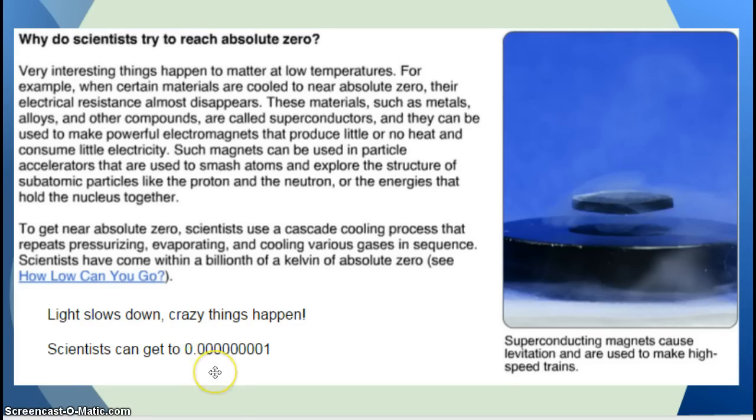Scientists can get to one billionth of a degree Kelvin. They can get to 0.0000001 Kelvin. But they still haven't gotten to absolute zero. And so this is part of why scientists try to cool things down super cold.